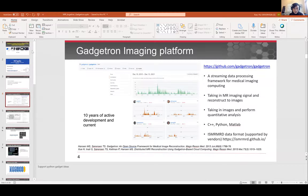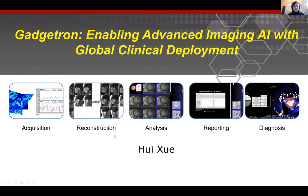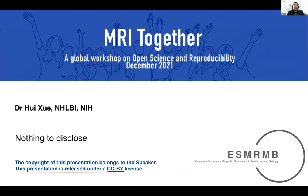The next talk, which was already alluded to by Dr. Block, is on Gadgetron. The title is 'Gadgetron: Enabling Advanced Imaging AI with Global Clinical Deployment' by Dr. Hui Hsieh. My name is Hui, I'm working at NIH. It's my pleasure to give this talk today. I have nothing to disclose.